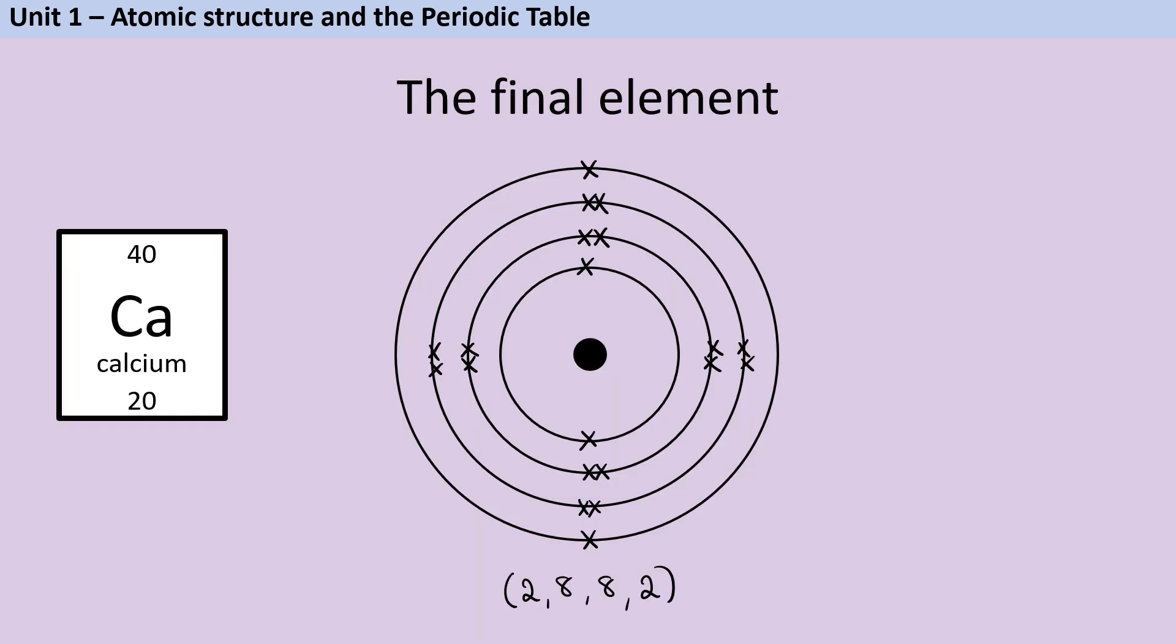When you get to shell four you're only ever going to be asked to draw the electron arrangement of potassium which is in group one or calcium which is in group two. The reason for this is that after calcium there are some new rules that we're not going to talk about until we get to year 12 and A-level chemistry.